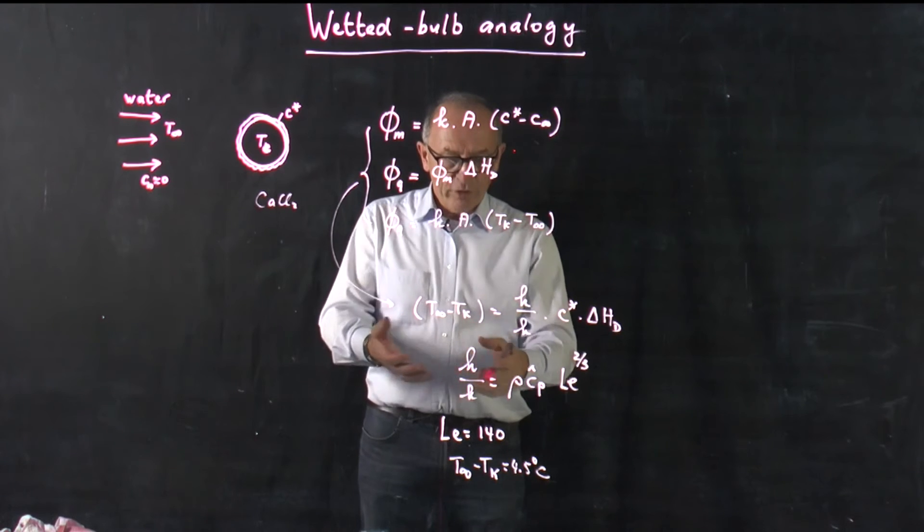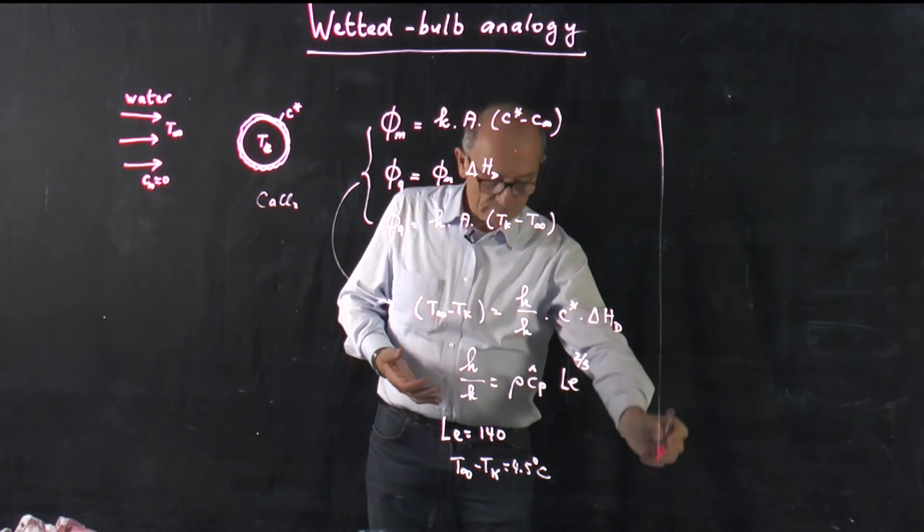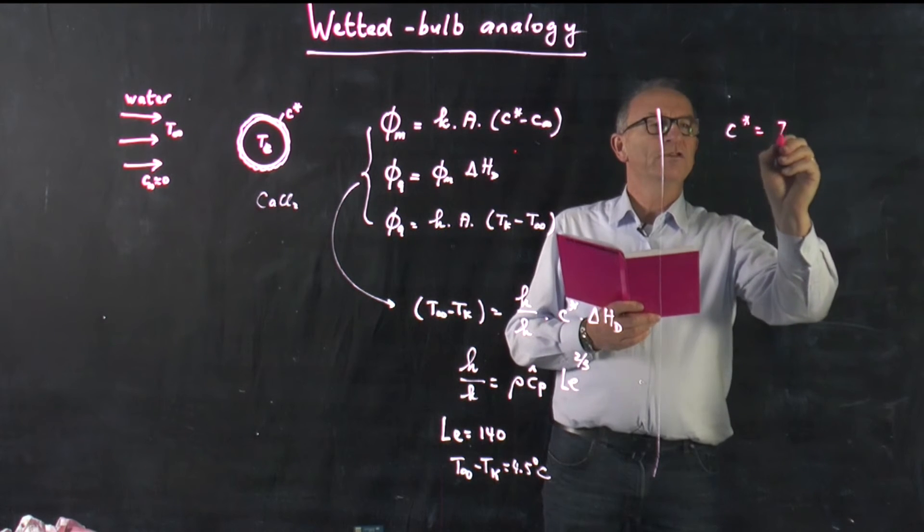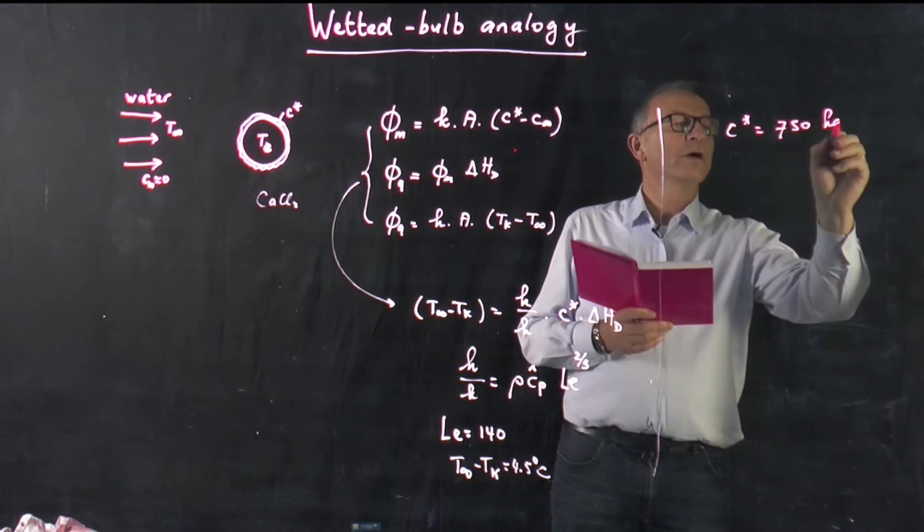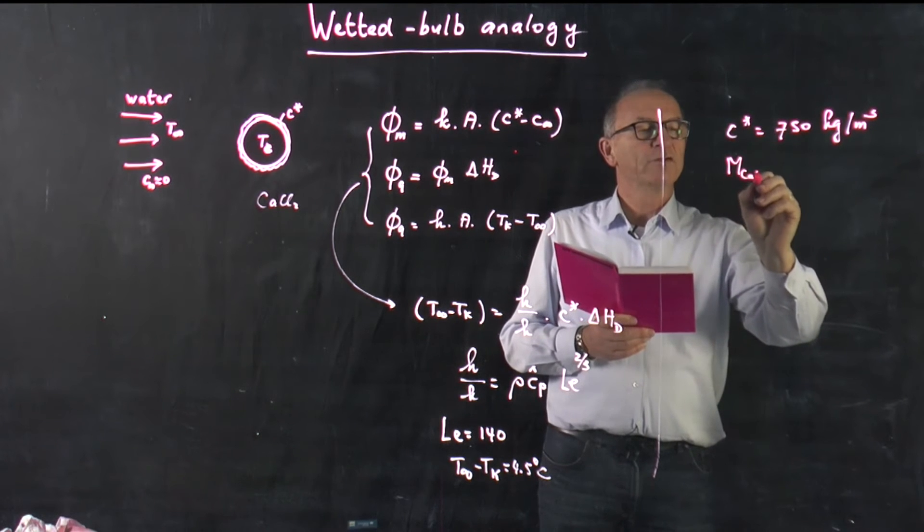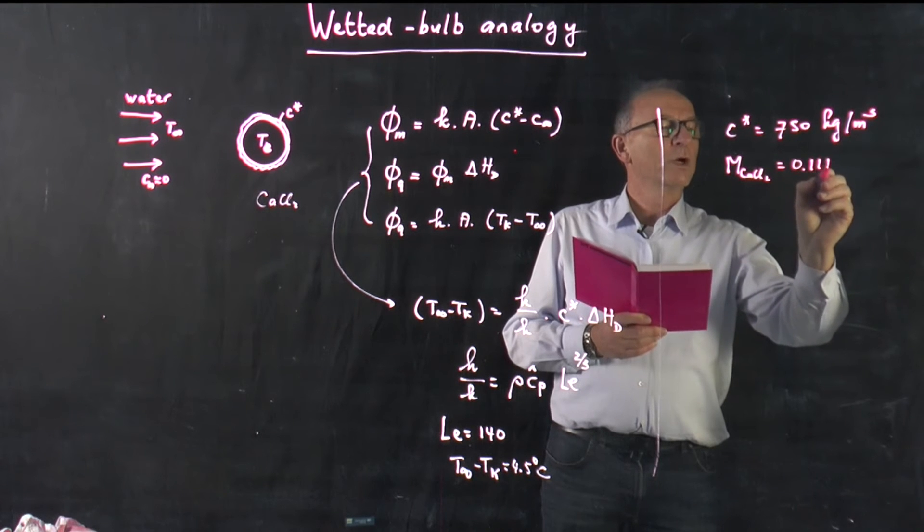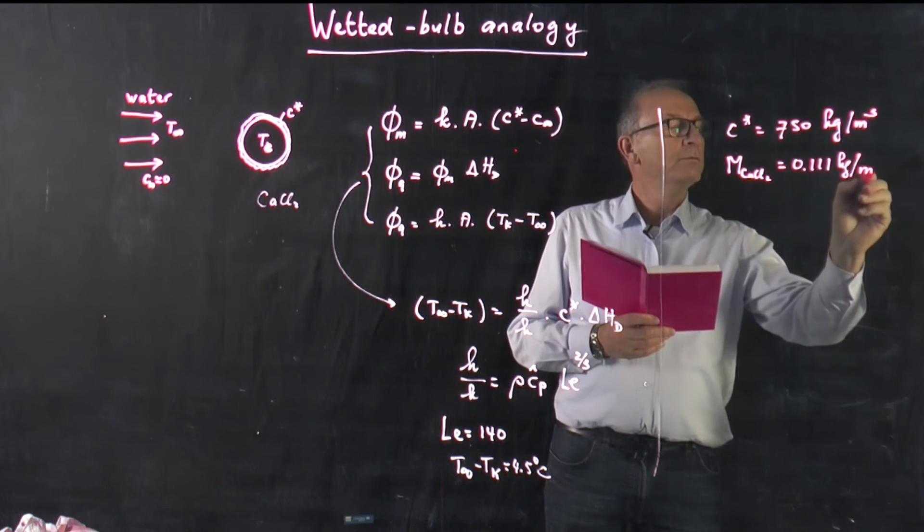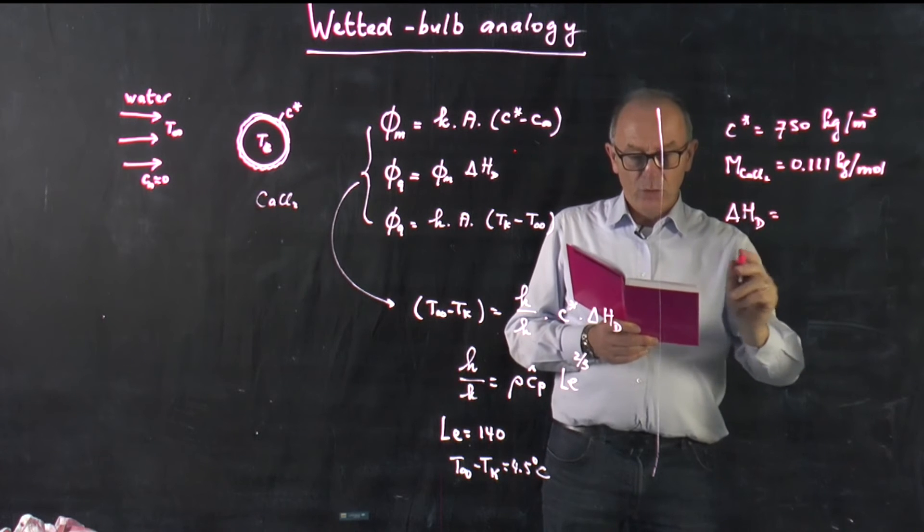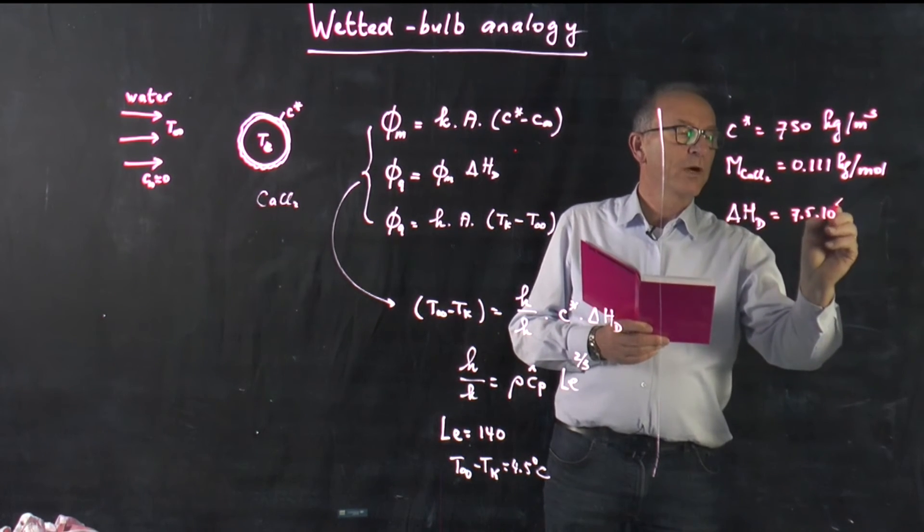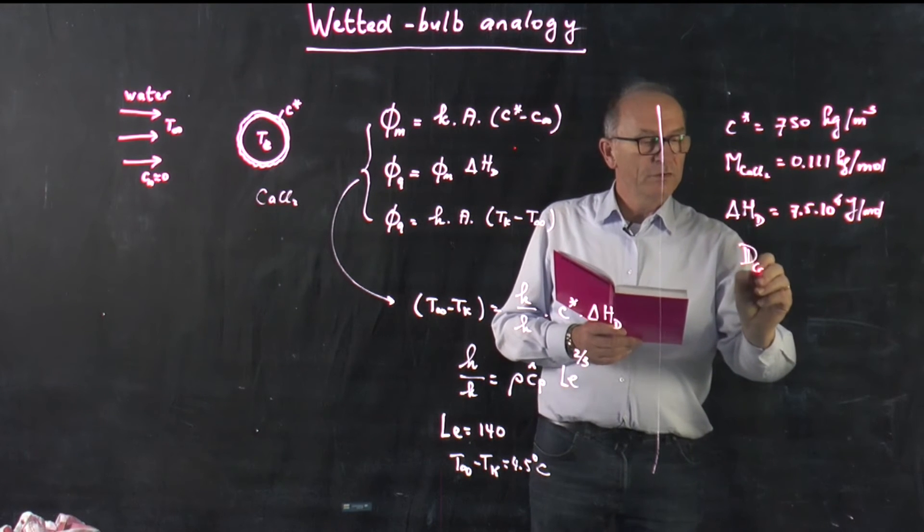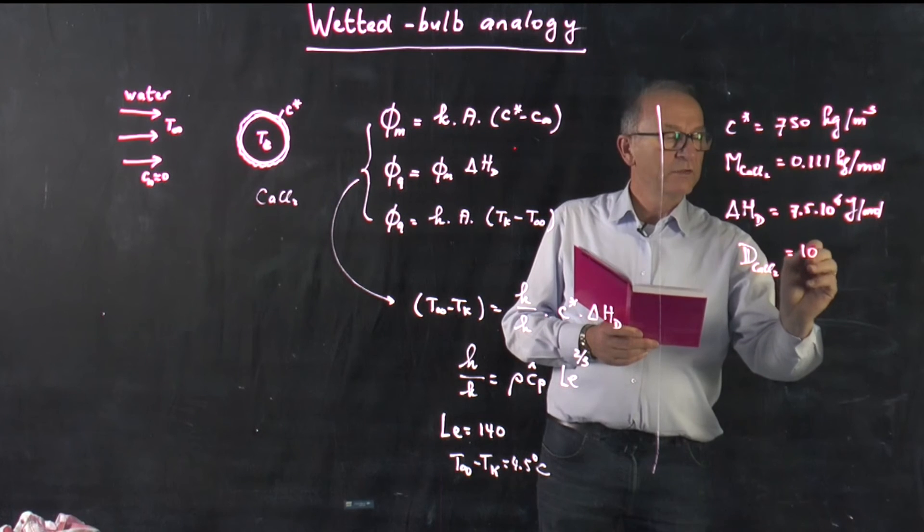And to give you the numbers of this, I will write all the numbers here which I used to calculate this. The first number is the saturation concentration is 750 kilograms per cubic meter. Further, I used the molecular weight of calcium chloride which is 0.111 kilogram per mole. I used delta H which was equal to 7.5 times 10 to the power 4 joules per mole. I used the diffusion coefficient of calcium chloride which is equal to 10 to the minus 9.